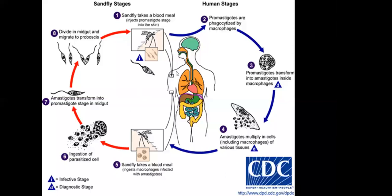The promastigote is injected into the host. Being recognized as a foreign body, it is engulfed by macrophages through phagocytosis. Upon engulfment, the promastigote loses its flagellum and transforms into the amastigote. This amastigote then multiplies by binary division inside the macrophage.